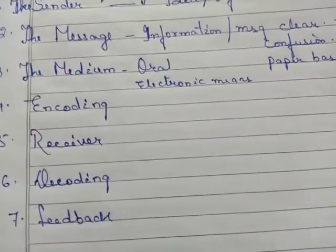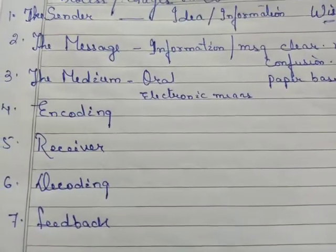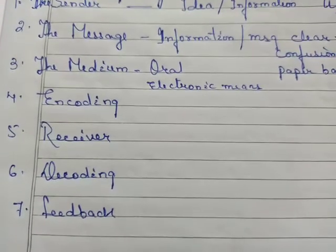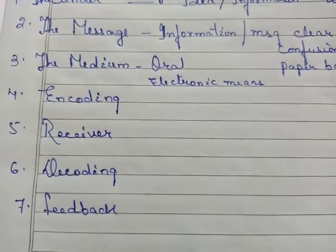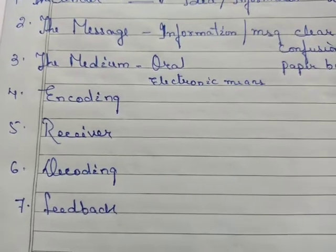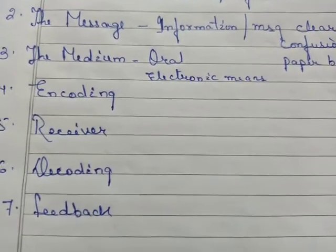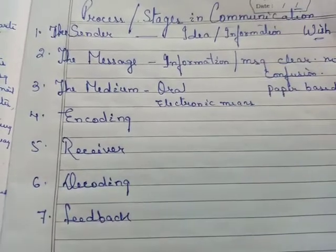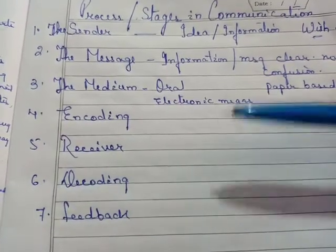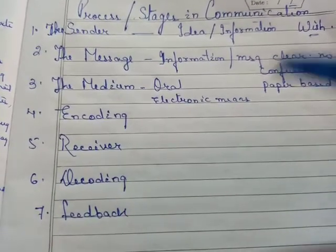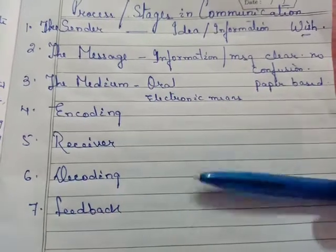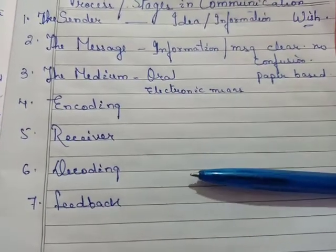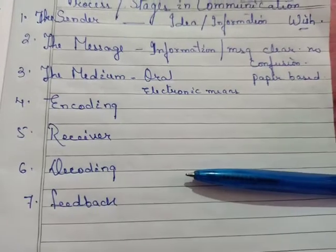What is encoding? The process of translating the meaning of a message into suitable words, symbols, or gestures is known as encoding. The sender translates the meaning of the message or information or idea in the simplest way so that the receiver can understand — that is known as encoding.